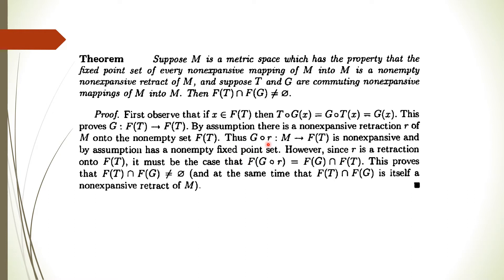So G is a non-expansive mapping from FT to FT. By our assumption, there is a non-expansive retraction R onto FT, which is also non-empty. Thus G∘R is a mapping going from M to FT which is non-expansive with a non-empty fixed point set. Since R is a retraction onto FT, we can show that the fixed point set of the mapping G∘R equals the fixed point set of G intersected with the fixed point set of T.